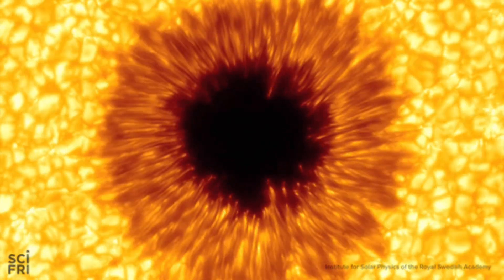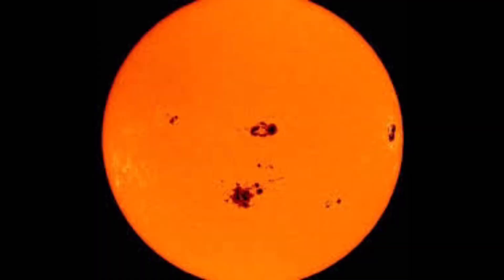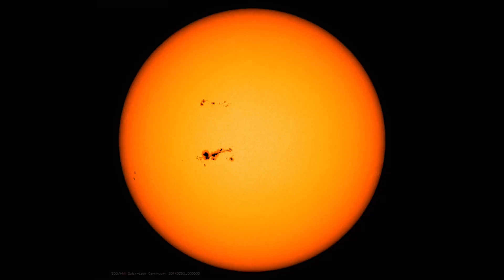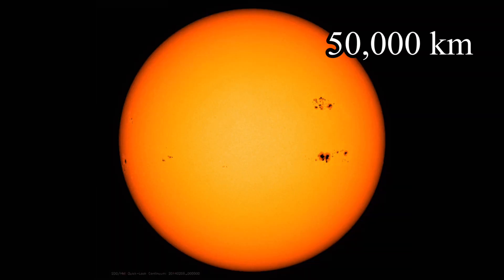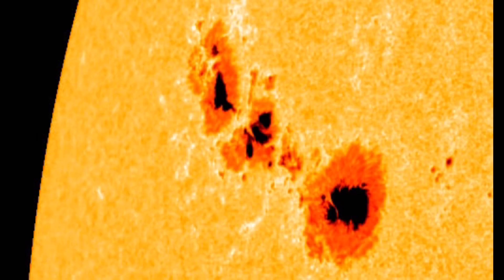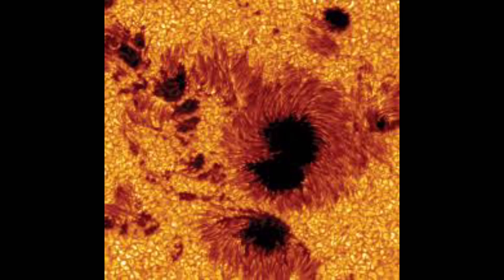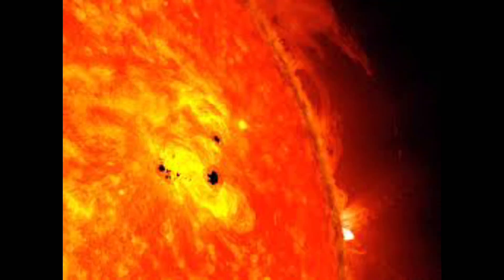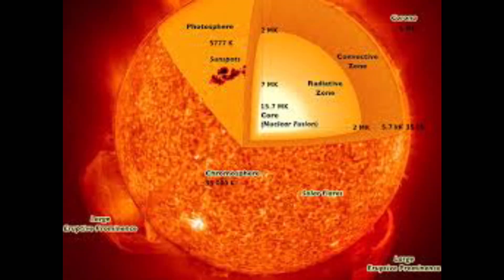Sunspots are the cooler parts of the sun's surface and occur in the photosphere. These cooler parts can be up to 50,000 kilometers across the sun. These temporary spots appear darker than the warmer plasma surrounding them. They are thought to be caused by interactions with particularly strong regions of the underlying magnetic field, which slightly reduce the radiation coming up from the core, cooling the surface.